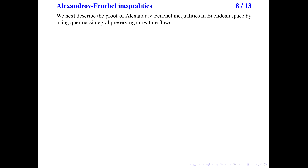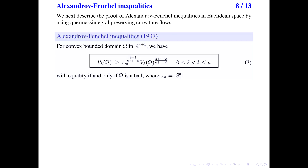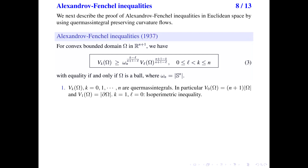Next, we describe the proof of the classical Alexandrov-Fenchel inequalities in Euclidean space using the curvature flow. For a convex bounded domain omega in Euclidean space, the Alexandrov-Fenchel inequalities compare different quermassintegrals. In inequality 3, the left-hand side is V_k and the right-hand side is V_l to some power, with index k greater than l. In particular, V_0 is just the volume of the domain omega (up to a constant n+1), and V_1 of omega is just the area of the boundary. So for k equal to 1 and l equal to 0, the inequality is just the isoperimetric inequality. The Alexandrov-Fenchel inequalities can thus be viewed as the higher-order case of the isoperimetric inequality.